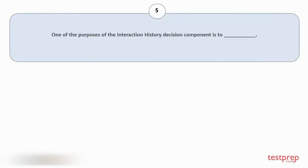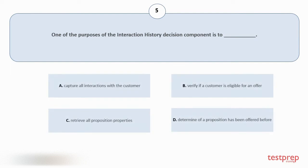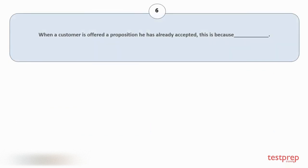Question number five: One of the purposes of the interaction history decision component is to do what? Your options are: A) capture all interactions with the customer; B) verify if a customer is eligible for an offer; C) retrieve proposition properties; D) determine if a proposition has been offered before. The correct answer is option A.